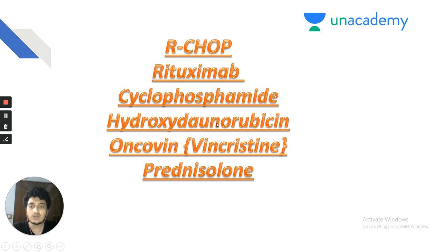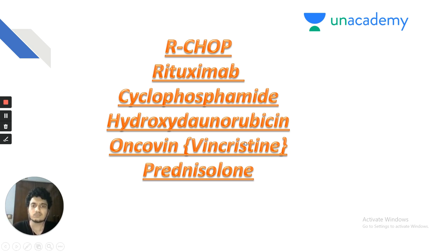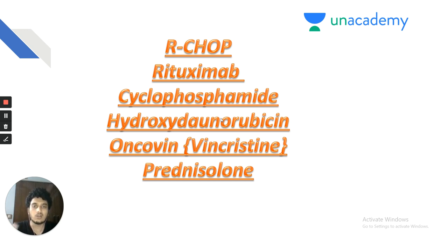What is the side effect of Oncovin — Vincristine? These are spindle poisons and the most common side effect of Vincristine is peripheral neuropathy. What is the side effect of Hydroxydoxorubicin? It is an anthracycline group of drug and the side effect is cardiomyopathy — both restrictive and dilated cardiomyopathies can be caused by Hydroxydoxorubicin and Doxorubicin. These are cardiotoxic drugs.